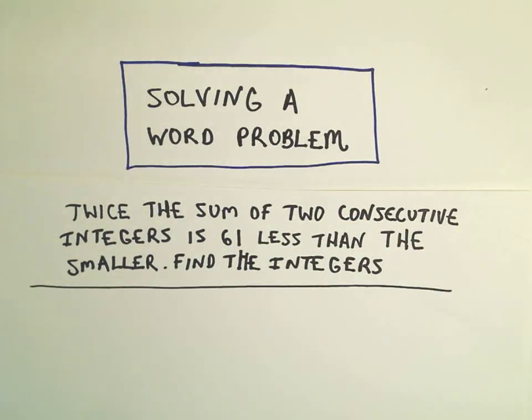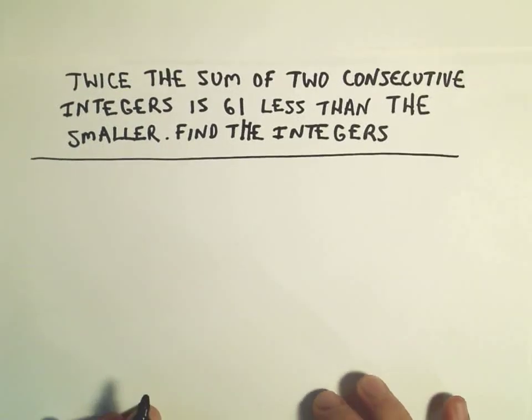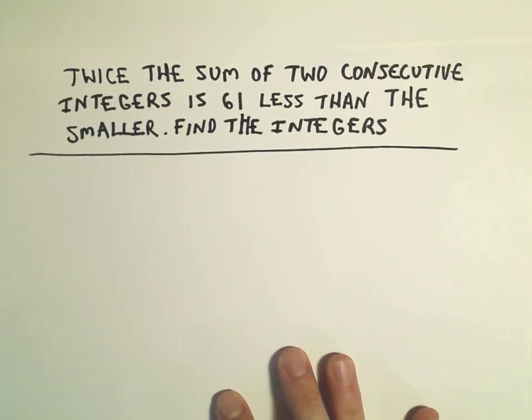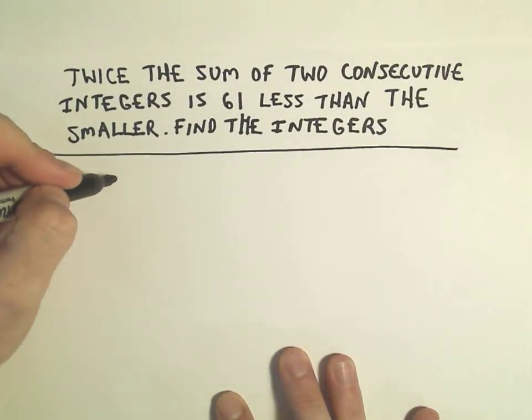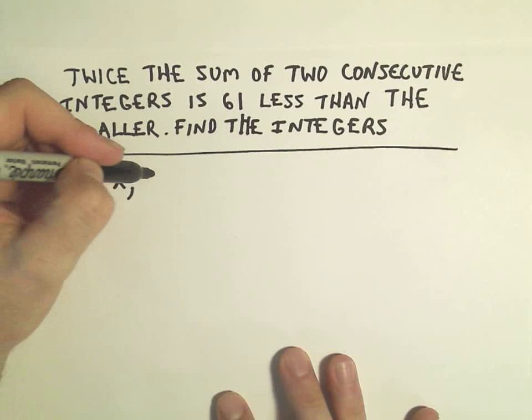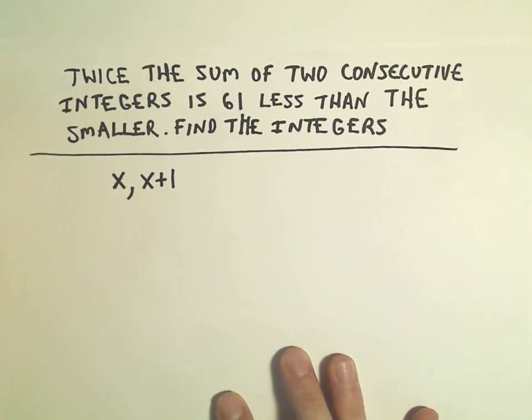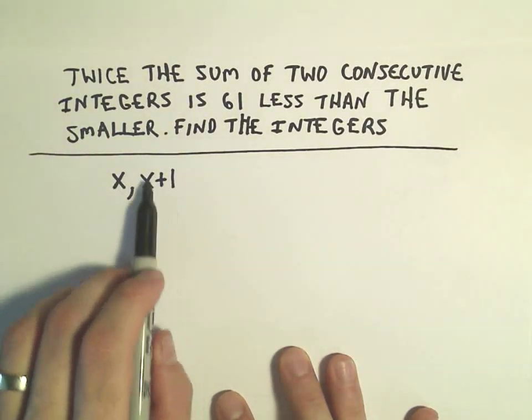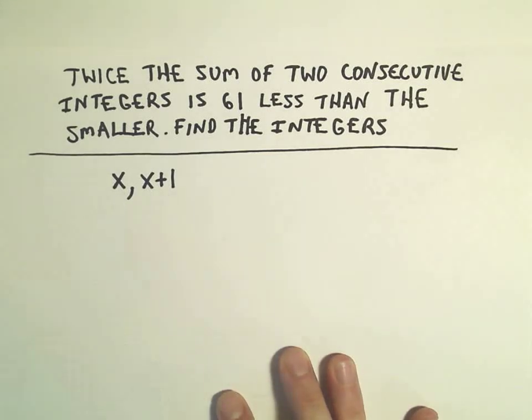The first thing I want to do is create an equation out of this statement. Let's call our integers generically, maybe I'll call the first one x. If one of the integers is x, we could call the other integer x plus 1. To get to the next one we would simply add 1 to this one, and then those would be consecutive.